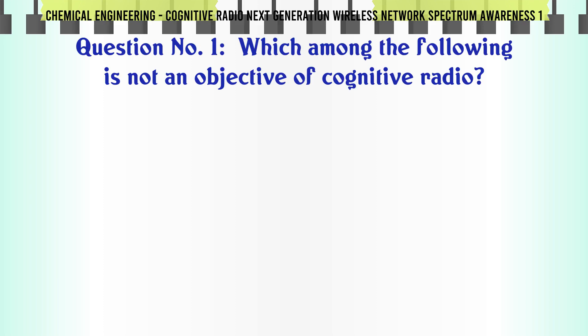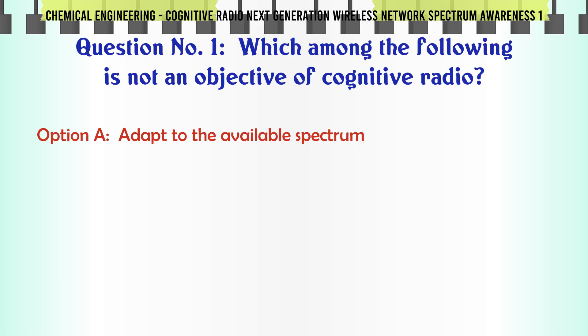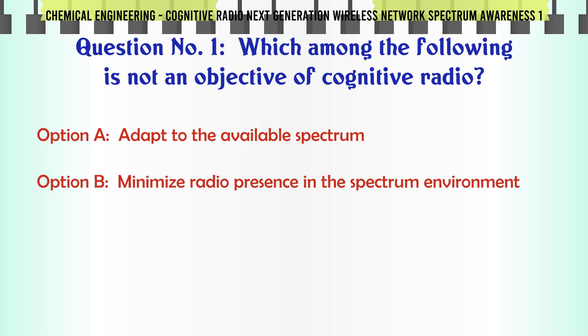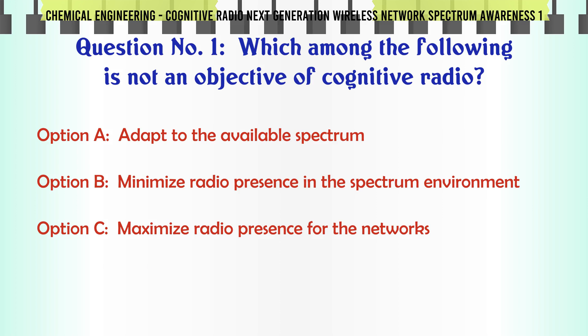Which among the following is not an objective of cognitive radio? A. Adapt to the available spectrum. B. Minimize radio presence in the spectrum environment. C. Maximize radio presence for the networks. D. Exploit spectrum holes.